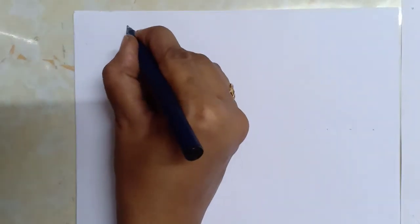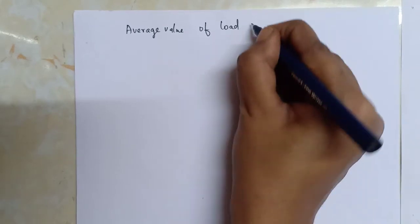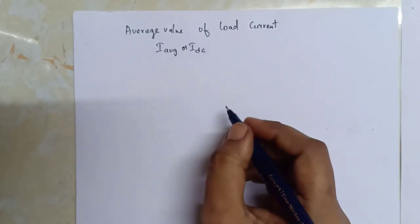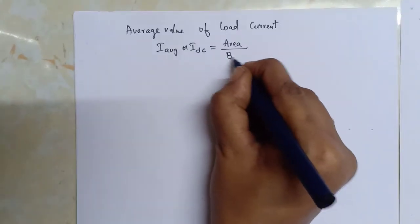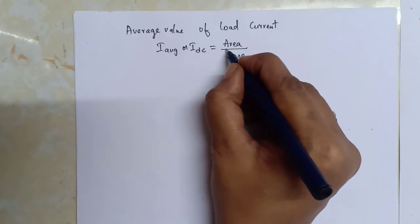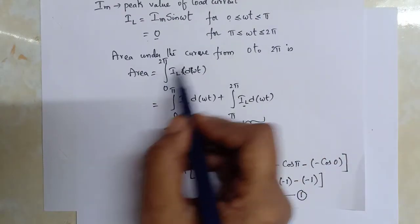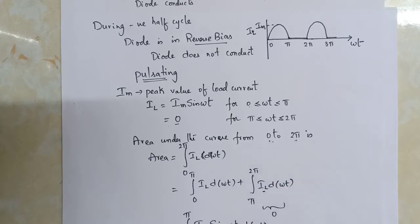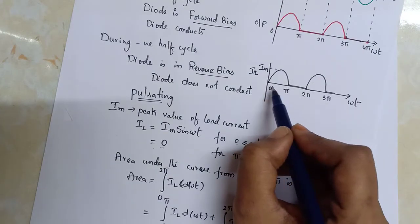Let us now find out the average value of load current. The average value of load current, also called IDC or the DC value of the current, is given by the area under the curve divided by the base. For this equation we have taken the curve from 0 to 2π, so the area under the curve from 0 to 2π is 2Im, and the base is 2π.